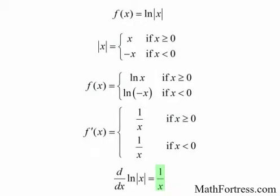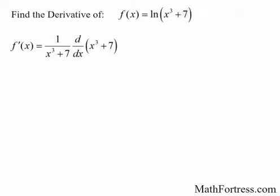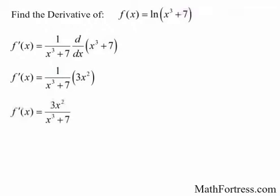Next time you see this function, don't panic — it's just equal to 1 over x. Now let's go over some examples. Find the derivative of f of x equals the natural log of x cubed plus 7. The function is a composition where the outer function is the natural logarithm and the inner function is x cubed plus 7, requiring the chain rule. The derivative is equal to 3x squared over x cubed plus 7.